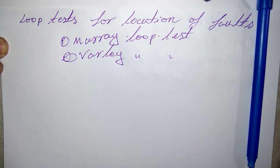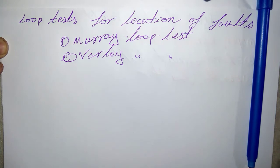The first one is Murray Loop Test. The Murray Loop Test is the most common and accurate method of locating earth fault or short circuit fault in underground cables.